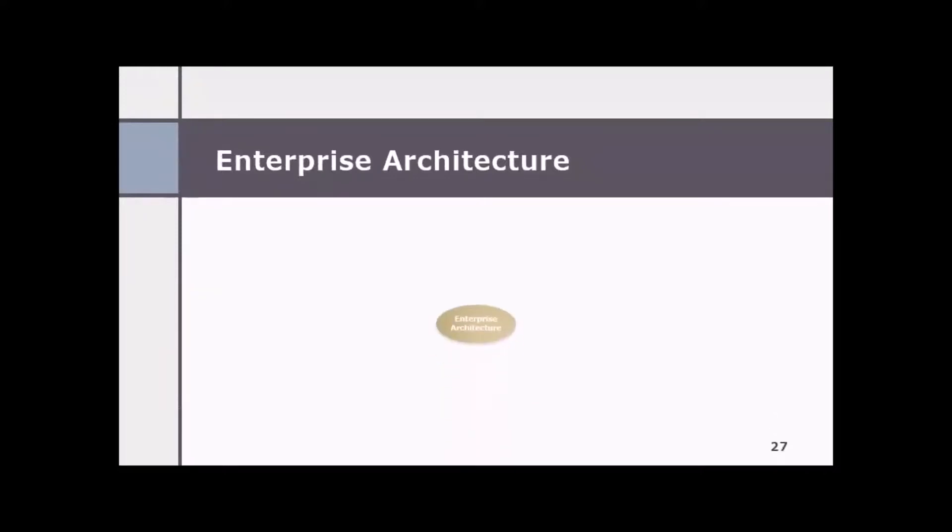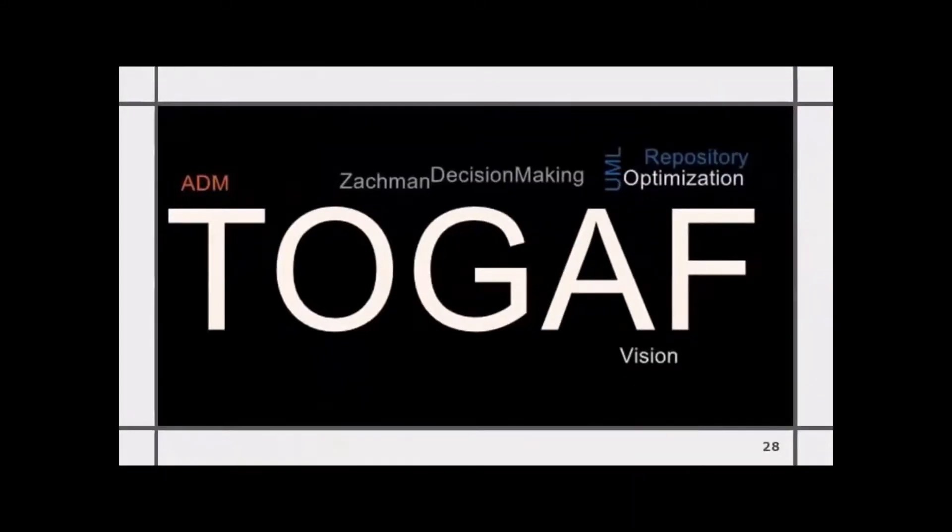Enterprise architecture practice is driven around business strategy and business process with business architecture, data architecture, application architecture, and technology architecture as a backbone. The main purpose of enterprise architecture is to determine how an organization can most effectively achieve the current and future objectives of its business goals. TOGAF stands for the open group architecture framework, which is one of the popular one, along with Zachman framework for enterprise architecture. ADM, which stands for architecture development method is core part of TOGAF.